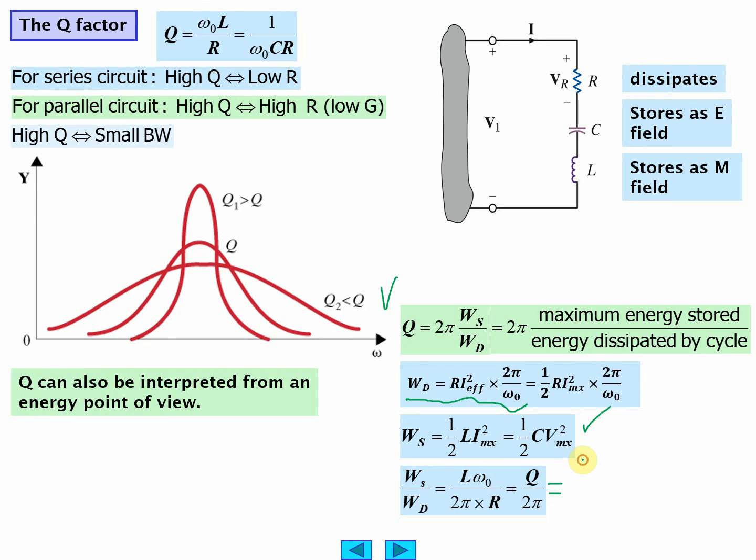Well, WS, I'll use the capacitance equation: one half C V max squared. And I probably should have used the inductive L I max, we'll see why in a second, because now I can write this as using the inductive form. And this, so WD is one half R I max squared times 2 pi over omega not.